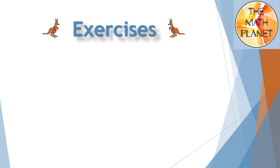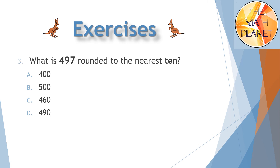Now let's solve the last question: what is 497 rounded to the nearest 10? First I will circle the tens digit, which is 9, and put an arrow to the right of it. My lower benchmark is 490 and the upper benchmark is 10 more. Since the tens digit is 9, I will take 49 tens and add one more 10 — that gives 50 tens, or 500.